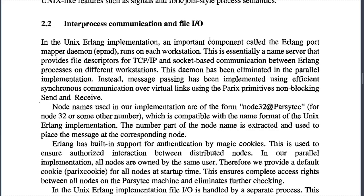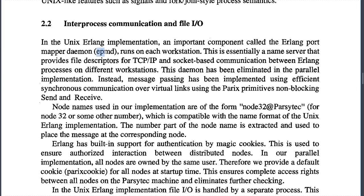In the Unix Erlang implementation, an important component called the Erlang Port Mapper Daemon (EPMD) runs on each workstation. This is essentially a name server that provides file descriptors for TCP/IP socket-based communication between Erlang processes on different workstations — and this is still the same today when you start Erlang. This daemon has been eliminated in the parallel implementation; instead, message passing has been implemented using efficient synchronous communication over virtual links using the Parix primitives non-blocking send and receive.